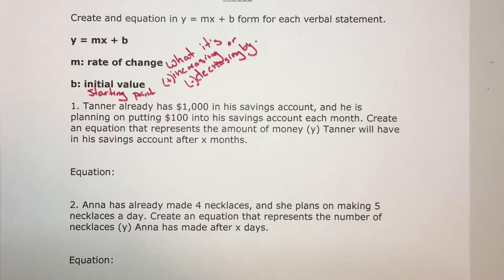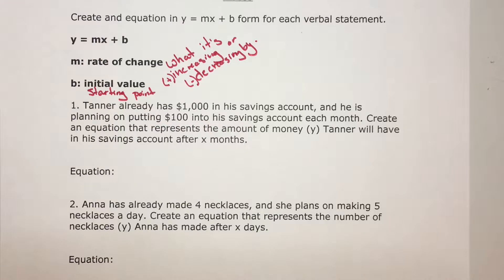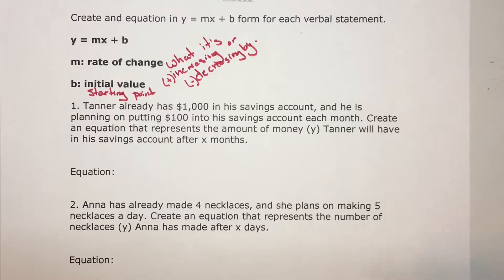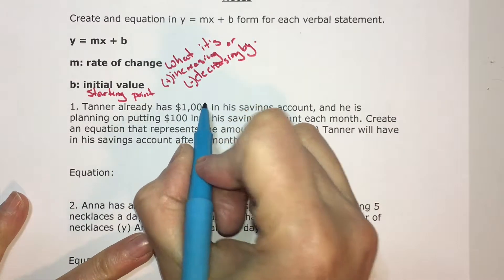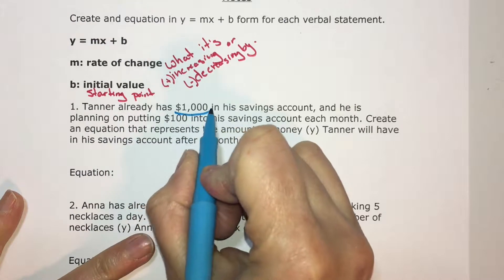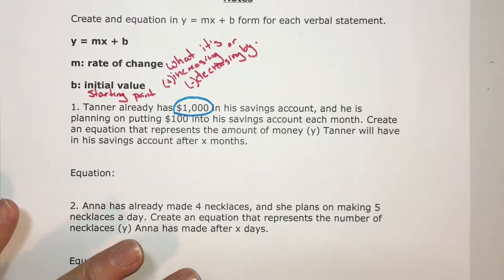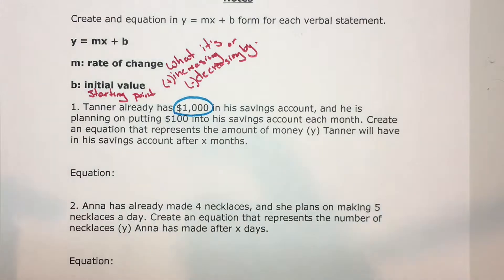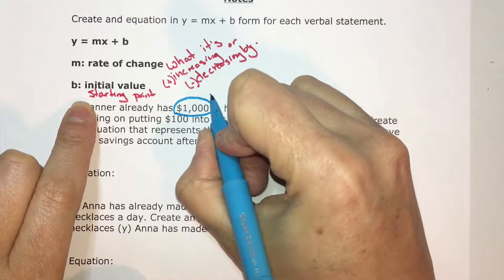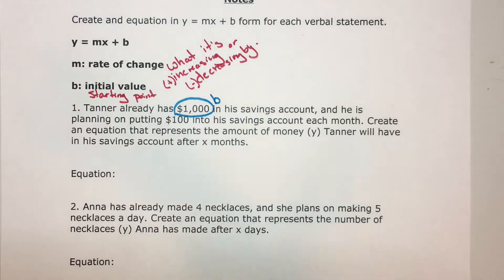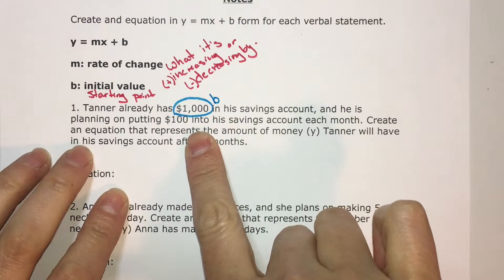This first problem: Tanner already had $1,000 in his savings account, and he is planning on putting $100 into his savings account each month. Create an equation that represents the amount of money y Tanner will have in his savings account after x months. He already has $1,000 — that's what he's starting with, so that's b, our initial value or starting point.